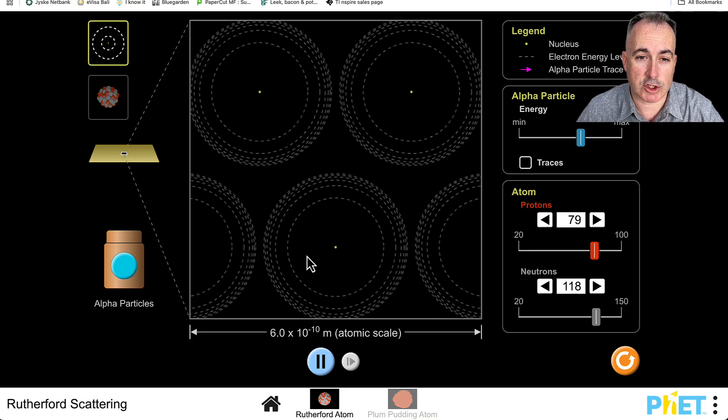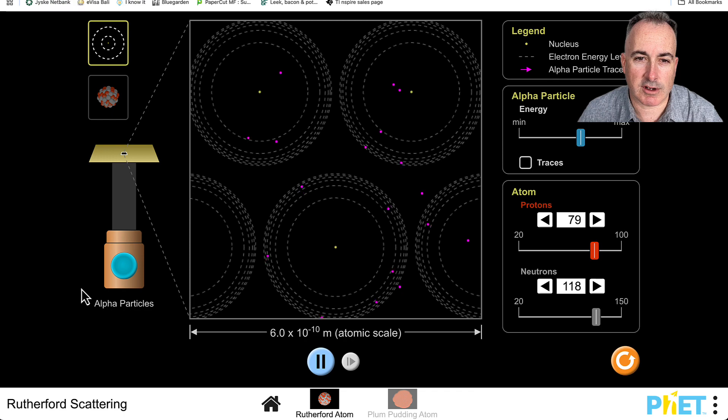This time it's mostly empty space, but because the nucleus is positive and these alpha particles are positive, some of them will actually be deflecting. Let's see what happens. If I press go, you're going to see these particles start deflecting, going in weird directions. Watch out—some of them come almost straight back, or sometimes even exactly straight back. Look, this one went straight back.